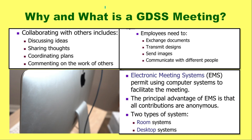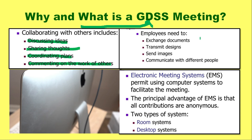Now we cover what a Group Decision Support System meeting is and why and how these meetings are conducted. Collaborating with others is the main aim of a GDSS meeting — also called electronic meetings. Through GDSS meetings, collaborators discuss their ideas, share their thoughts, coordinate proper plans, and comment upon each other's work during the meeting. Employees also need to exchange documents, transmit designs, send images, and communicate with different people, or they may need to chat one-to-one.